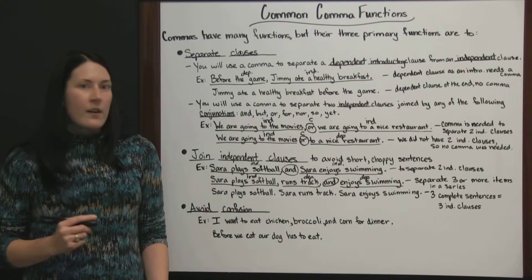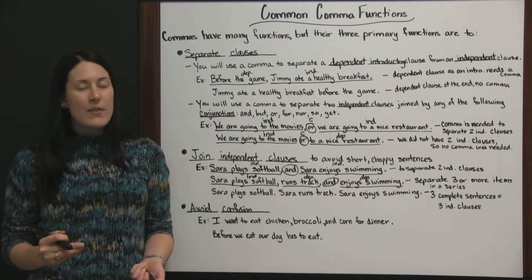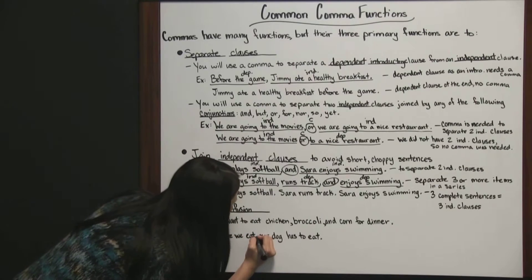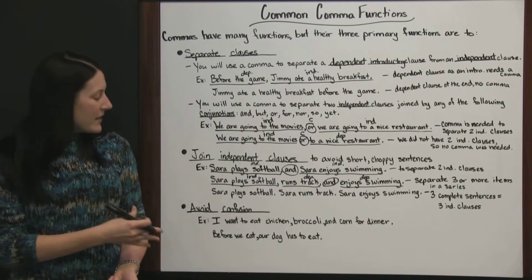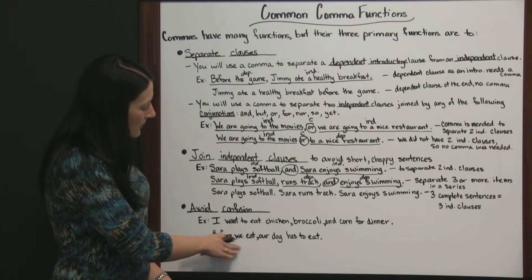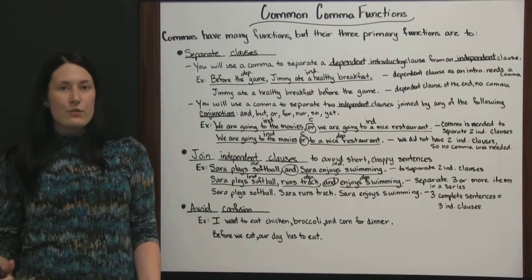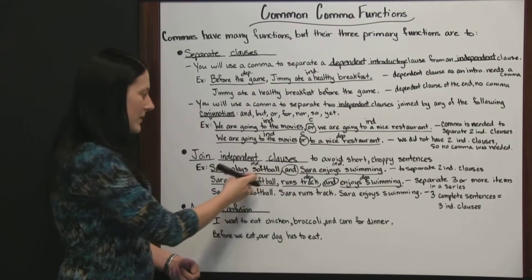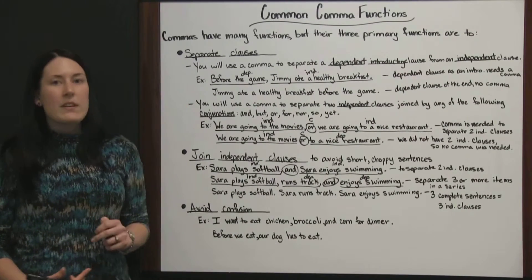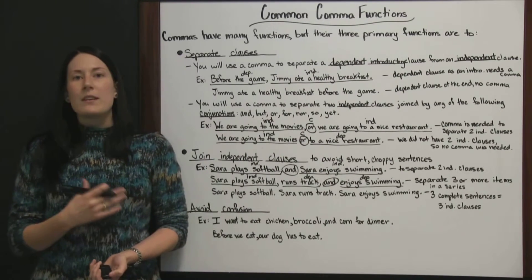'Before we eat our dog has to eat.' Without a comma, this doesn't make sense — it sounds like 'before we eat our dog.' But with the comma: 'Before we eat, our dog has to eat.' This is one of those dependent introductory clauses. We use a comma to separate clauses, and that can also avoid confusion. You see how some of these rules tie in together — introductory clause separated from the independent clause, dependent clause separated from independent clause. A lot of the rules of commas may overlap a little bit, but these are three of the primary functions you're going to see commas used for.